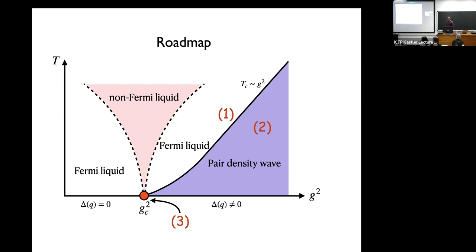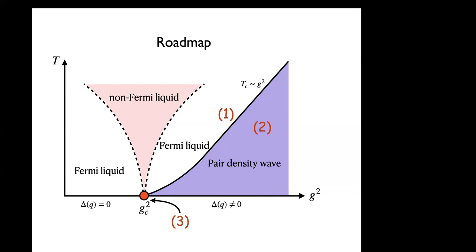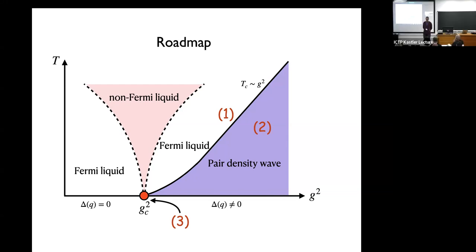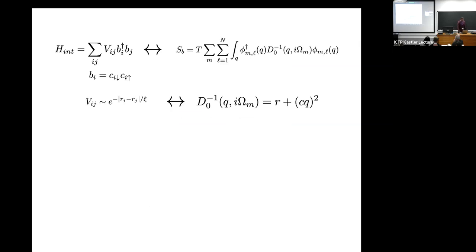A question was raised: since the interaction is treated purely in the pairing channel, what does this presage for normal-state response functions as a function of q? The only response function that enters is the pair-pair susceptibility. The particle-hole channel has not been asked about — we have not computed those.